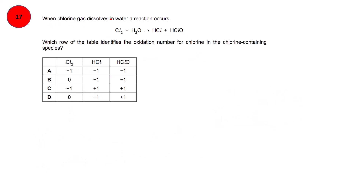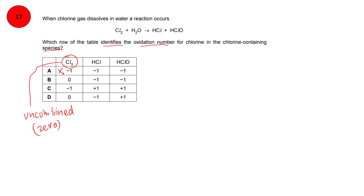When chlorine gas dissolves in water, a reaction occurs. Which row of the table identifies the oxidation number for chlorine in the chlorine-containing species? There are three species. In the first species, chlorine is present in uncombined form — free state. Whenever any element is present in uncombined form, its oxidation state is zero. By looking at the first column, we can eliminate options A and C, leaving B and D.